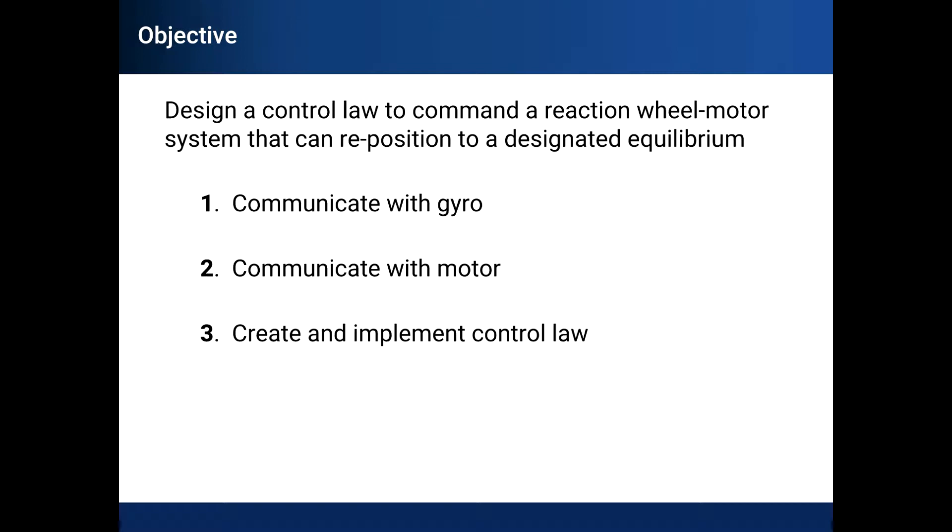Using these measurements, we can begin constructing a control law that will actually change the physical orientation of our system. To impart a momentum change, a reaction wheel can be used. Reaction wheels are simple systems that use a flywheel and a motor to adjust angular momentum in a system.